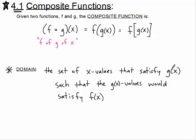Once we have values that work for g of x, then the g of x values also need to work or satisfy f of x. So we're starting with g of x, restricting that domain, and then anything else is fine as long as it's still okay to plug into f of x. That's our definition in words — let's figure this out with a couple of problems.